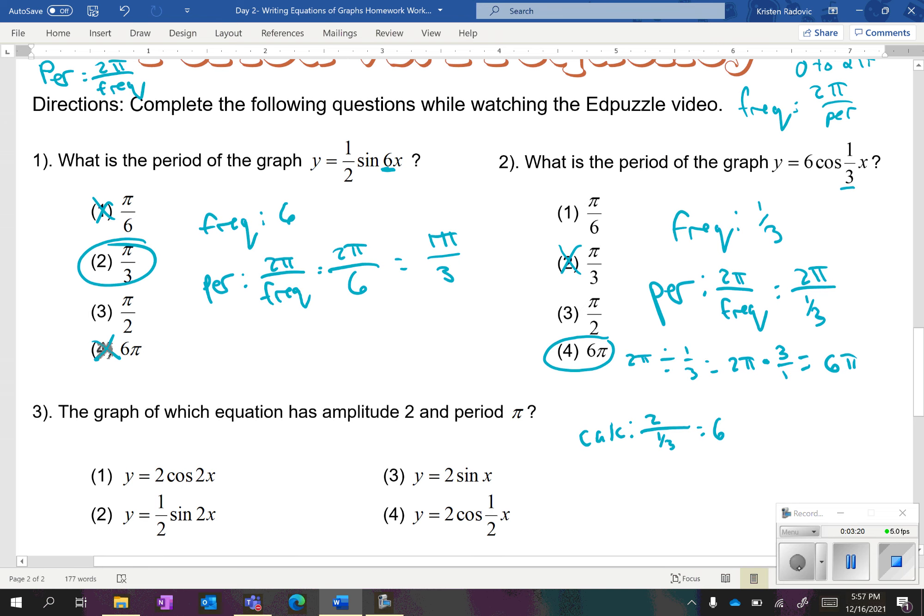Now, for the next one, they're asking which one has an amplitude of two and a period of pi. Just keep in mind, the amplitude is always positive. Anyway, amplitude is found in front of the equation, because it's a vertical stretch, so we need to multiply the entire equation. And that's not choice two, because choice two has an amplitude of one-half.